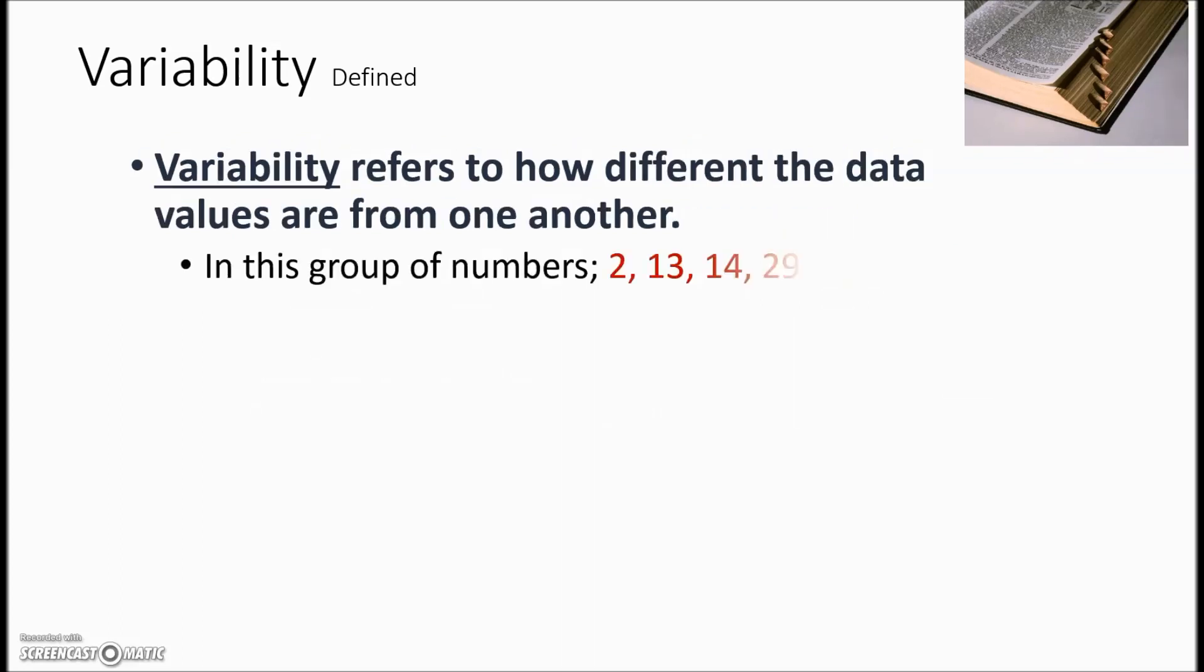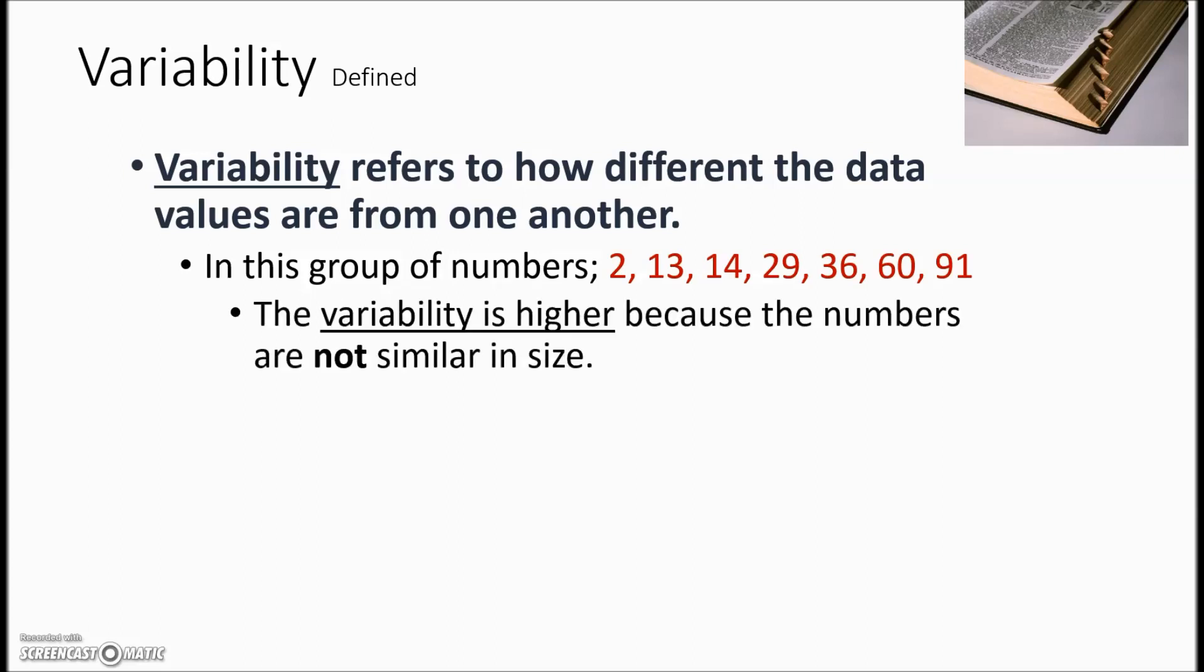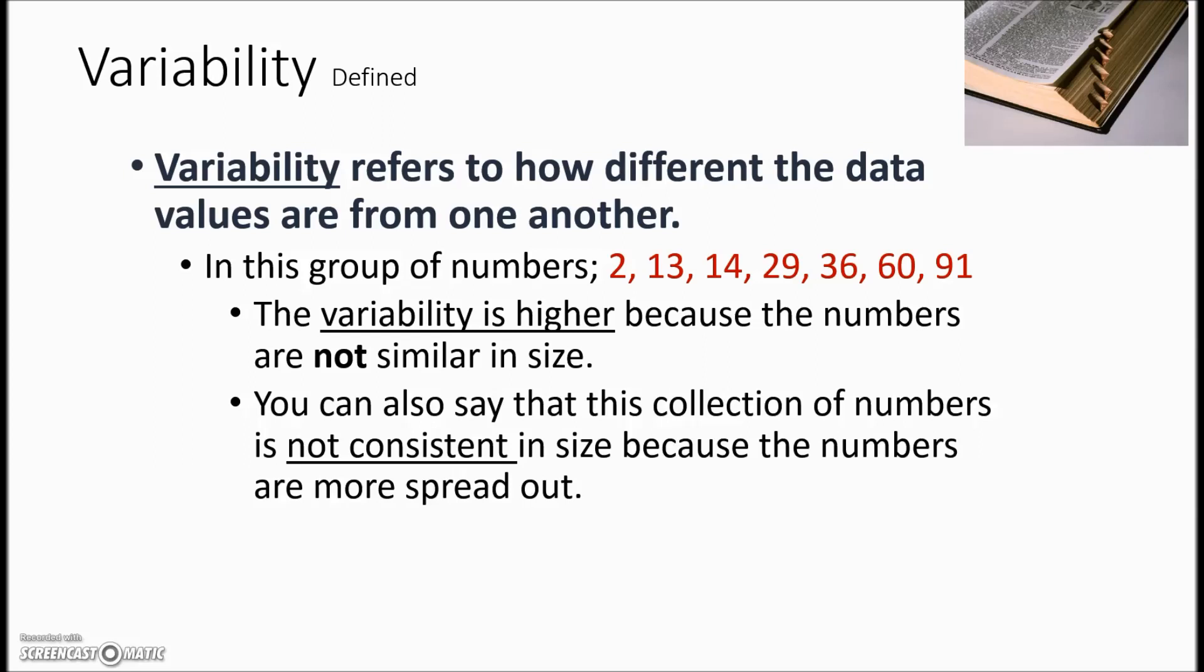In another illustration of variability here we have a different set of numbers with a low of 2 and a high of 91. As you can guess the variability is higher because the numbers aren't similar and also the values are not consistent in size because of the larger spread.